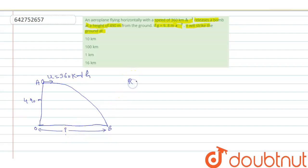Horizontal range is u into root 2h divided by g. u is